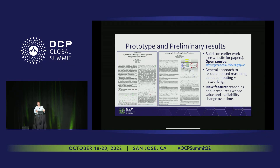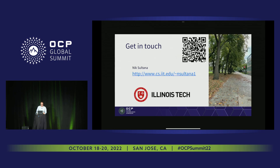If you'd like to find out more, I encourage you to look up these papers where the ideas of heterogeneity, distribution, and disaggregation are explored in some detail — they discuss the reasoning framework and give examples. I'm just going to wrap up here and I'd be very happy to take questions. My poster is just outside, and if we don't get to talk at this event, feel free to reach out to me via that link. Thank you.